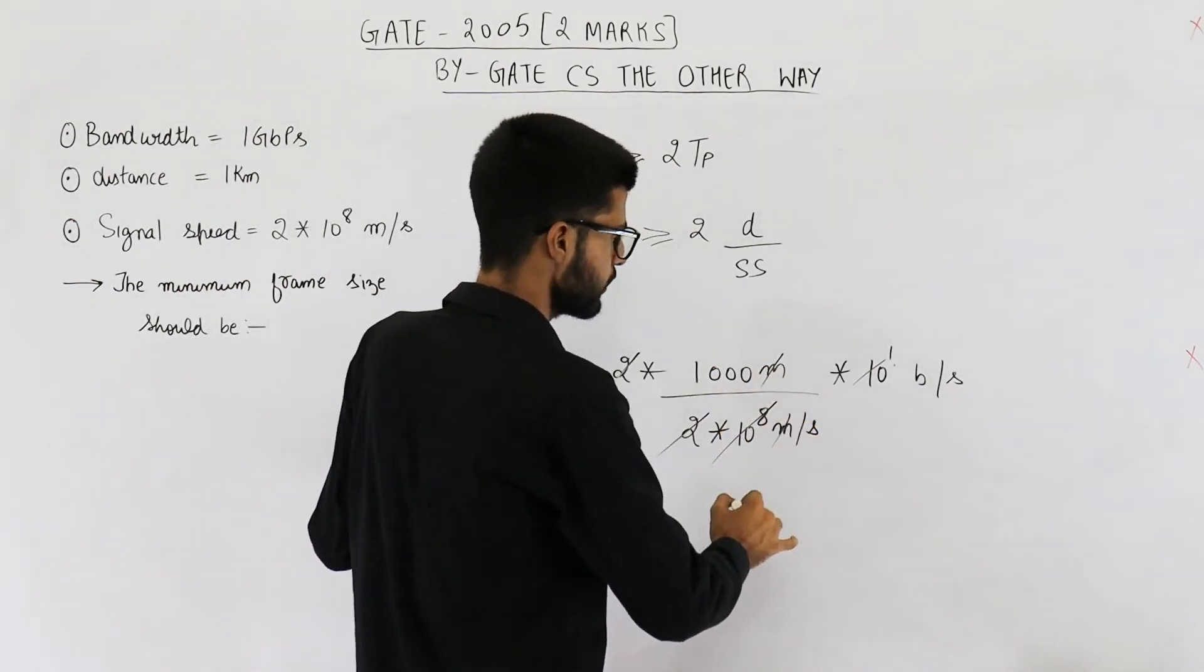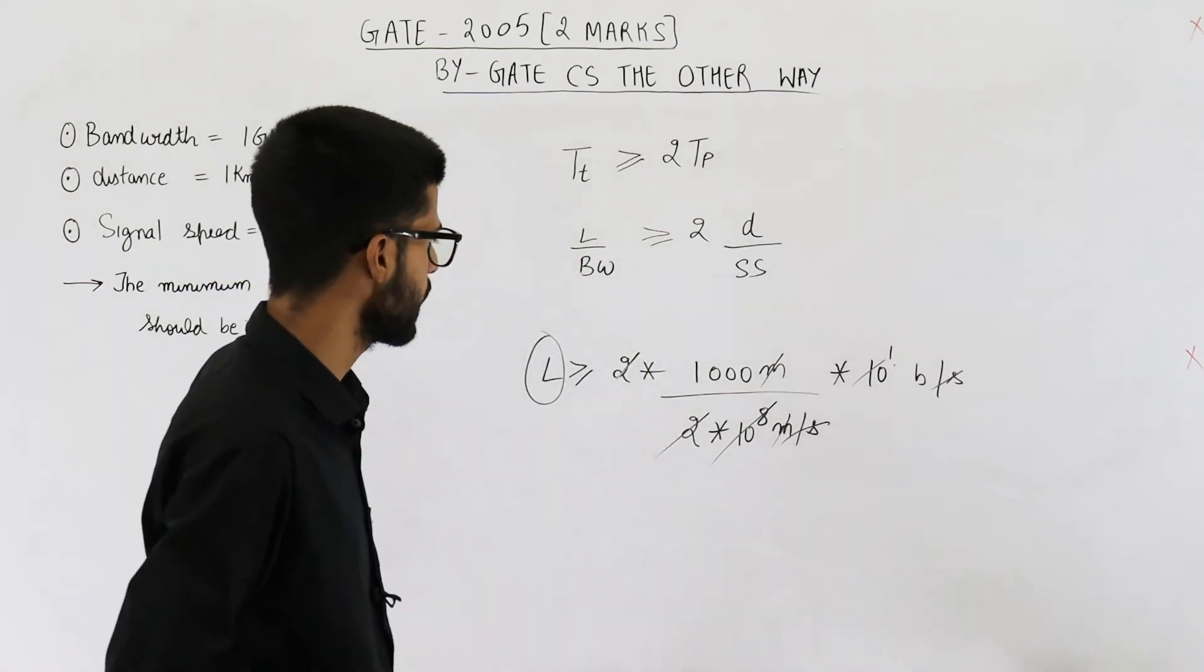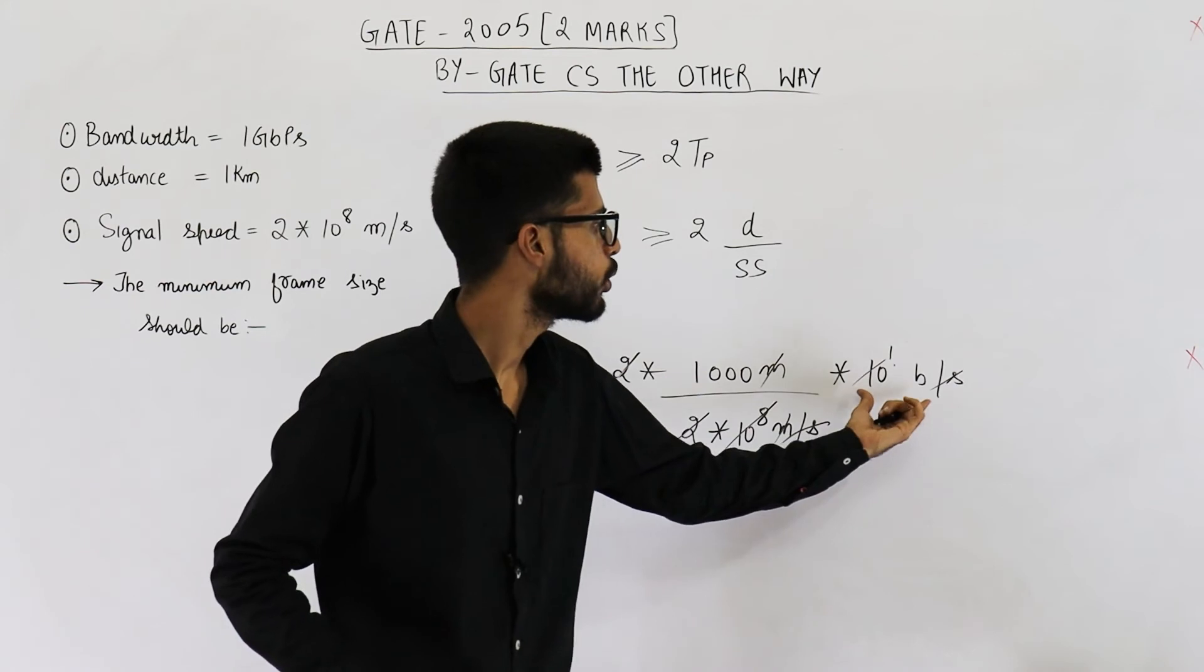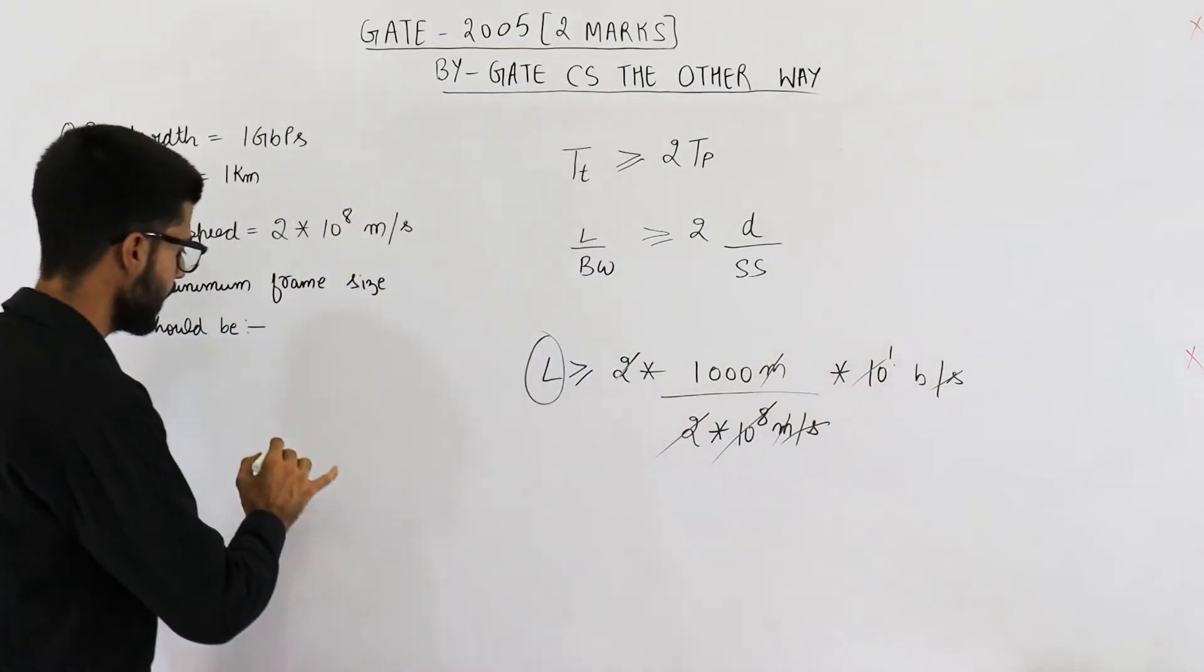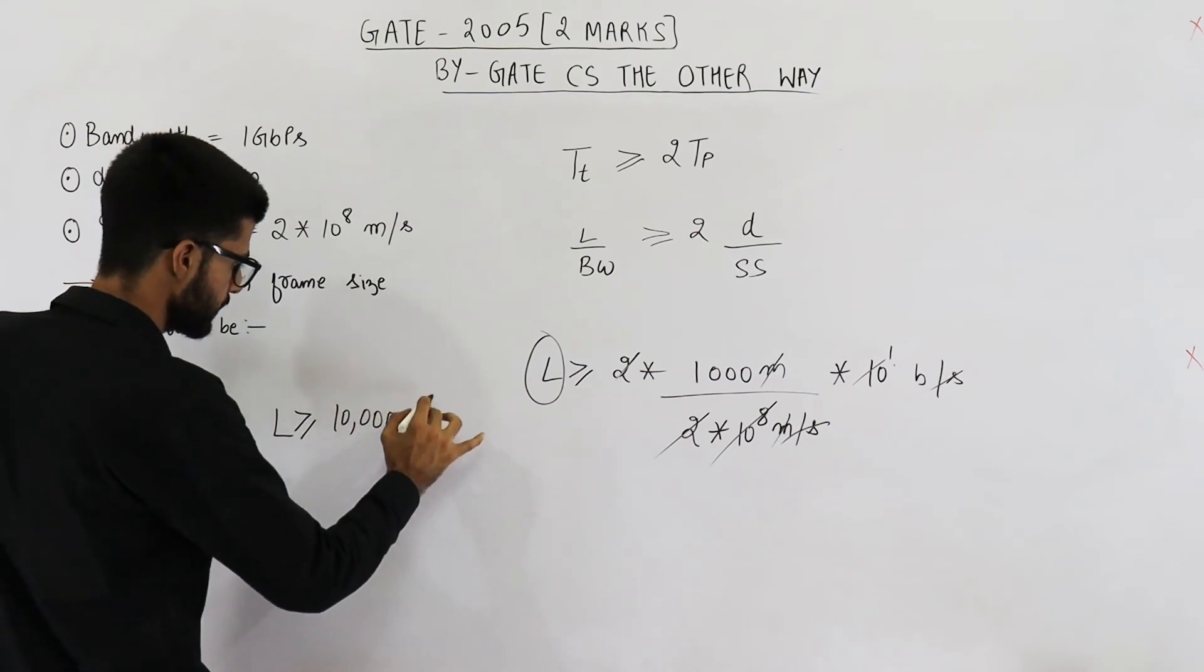Meter and meter can be canceled. Per second and per second can be canceled. So you are left with 1000 into 10 bits. So L is greater than or equal to 10,000 bits.